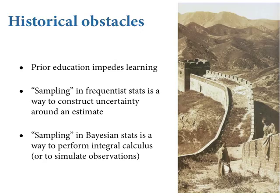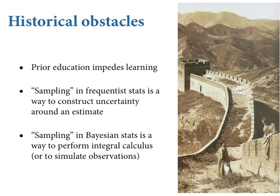In frequentist statistics, sampling typically means resampling the data in imagination. We imagine alternative data sets, and from each of those we get an estimator of some kind, like the sample mean. You collect a very large number of those and get a distribution called the sampling distribution, which characterizes the uncertainty in the estimator from the data you did observe. We don't do this in Bayesian statistics, even though we use the word sampling.